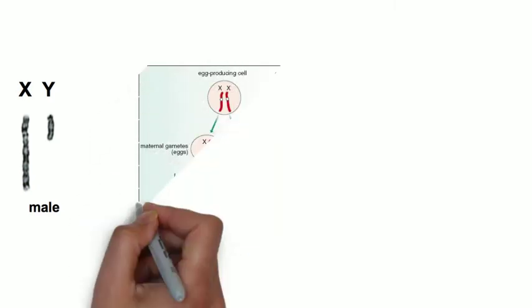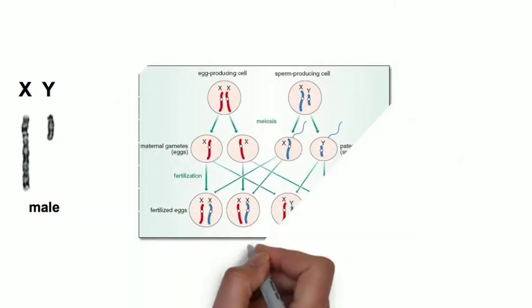If the X chromosome of male fuses with the X chromosome of the female, a female fetus (XX) is produced.